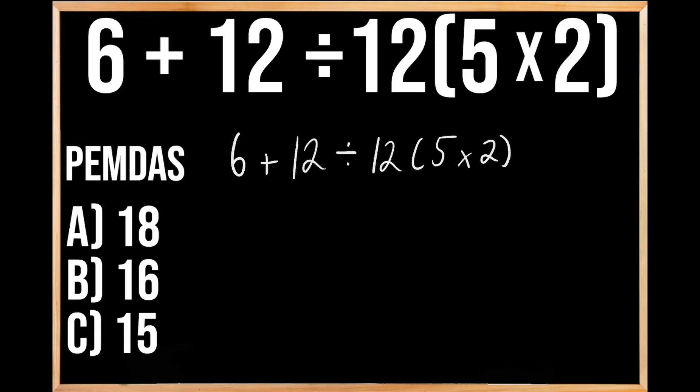So first we're going to multiply 5 times 2, which gives us 10. Then we're going to bring down the rest of this problem, so we have 6 plus 12 divided by 12, parentheses 10.